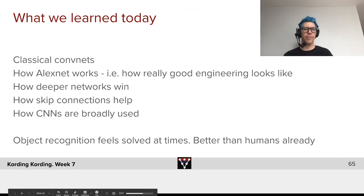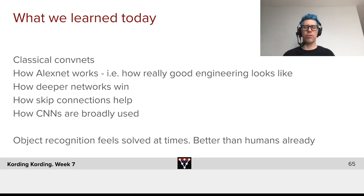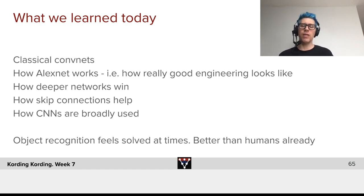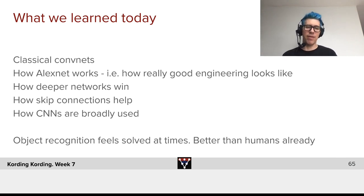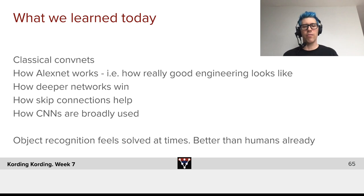Let's briefly talk about what we learned today. We learned about classical ConvNets, the kind of ConvNets that started revolutionizing image recognition and that solved ImageNet. We learned how AlexNet works, and how there's really amazing engineering behind it. We learned how, in many cases, deeper networks win, but also how skip connections can massively help in that endeavor. We learned how ConvNets are broadly used, and how there are a lot of problems in computer vision where they're really state-of-the-art and useful.